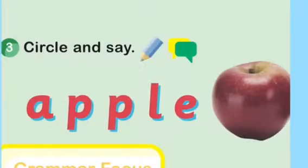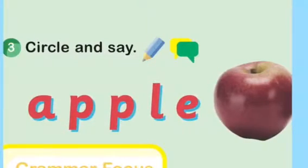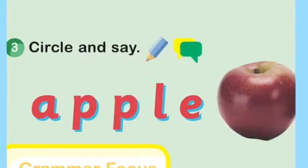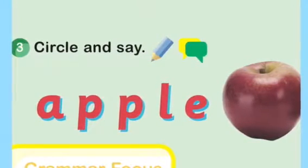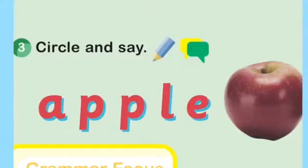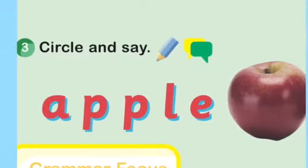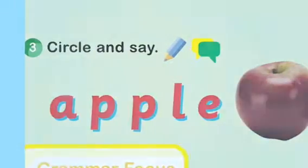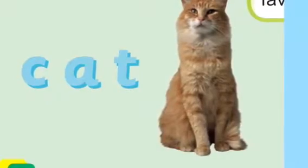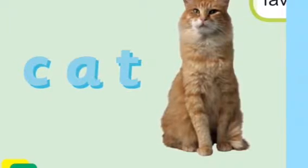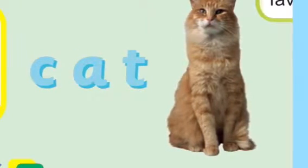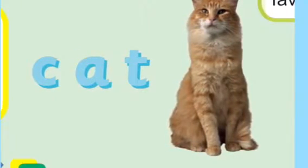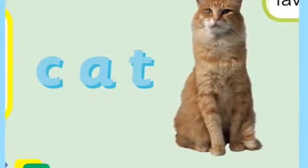Circle and say. A — A is for apple. A, A, apple. Where is the A? Circle the A. Number 2: C is for cat. C, C, cat. Where is the letter C? Circle the letter C.